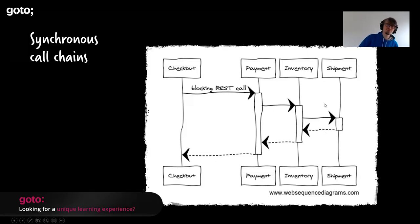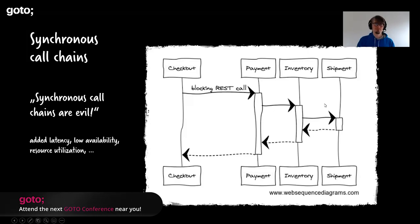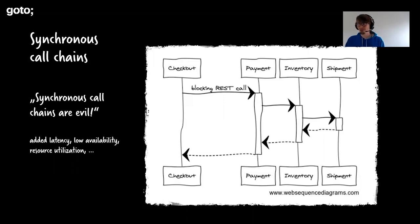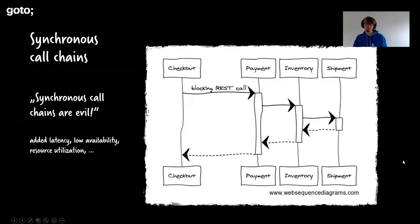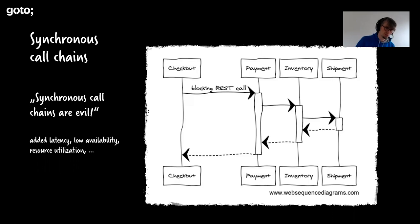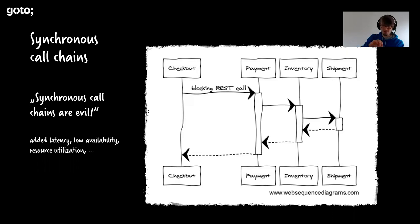These synchronous call chains are pretty evil. There are a lot of problems with them, which you also see in many microservice scenarios. They're blocking — if one service is not available, the whole thing is unavailable. They add a lot of latency because you wait for all services to do their work. They're probably not good at utilizing resources since most threads are just waiting. So you shouldn't use synchronous call chains for these scenarios — that's not new information, but we need it as a puzzle piece later on.